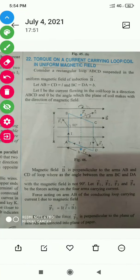This is the torque on a current carrying loop in a uniform magnetic field. Here is the loop ABCD that is placed in a uniform magnetic field.